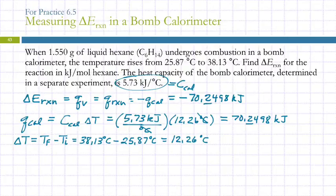What is the requested unit for delta E? Kilojoules per mole. This is the amount of energy released by 1.550 grams of hexane. Which, you know, if you're going to do another experiment, it's probably not going to be 1.550 grams of hexane. And so we would like something that we could use for other things. So we want kilojoules per mole. So what we're going to do is we're going to take our number of kilojoules and divide by the number of moles.